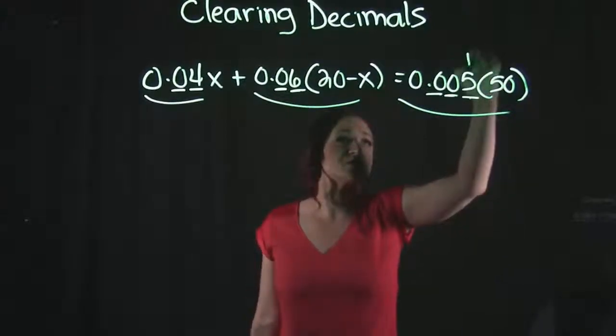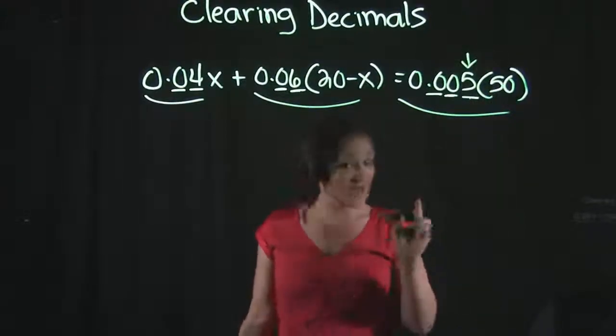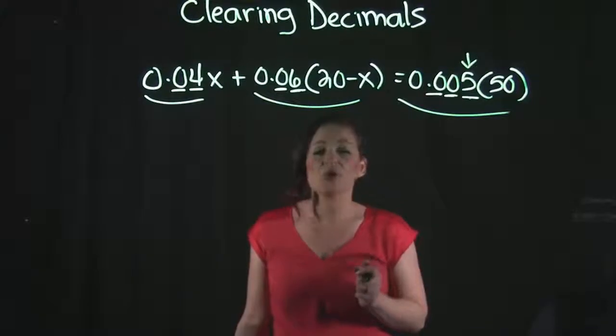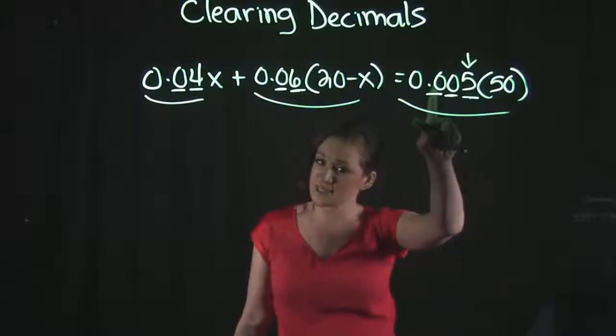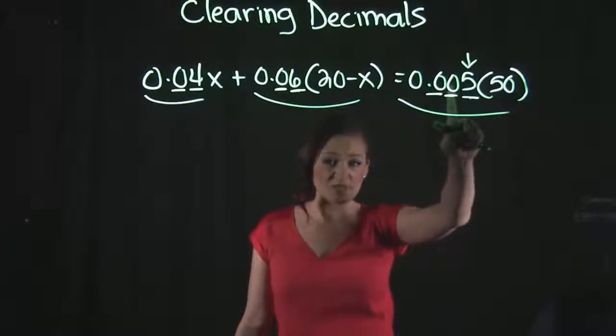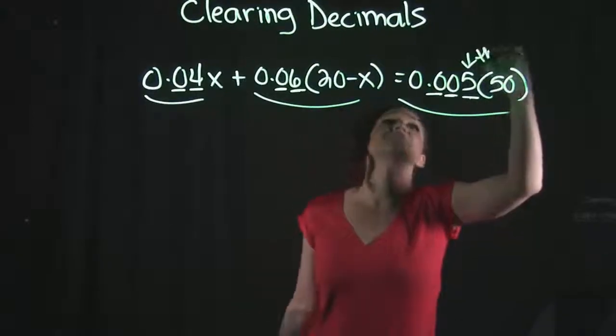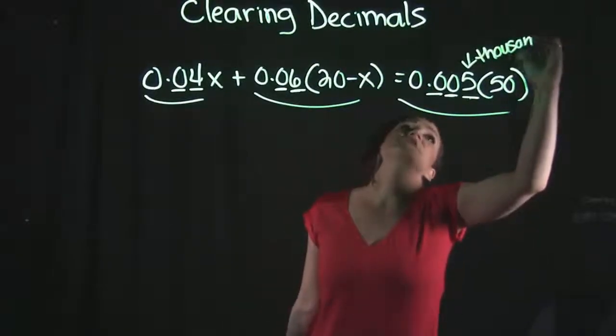So what I'm specifically concerned with is what is that place value. If you remember place values of decimals, the first place value is the tenths, then the hundredths, then we have the thousandths. So where that five is sitting, this is the thousandths place value.